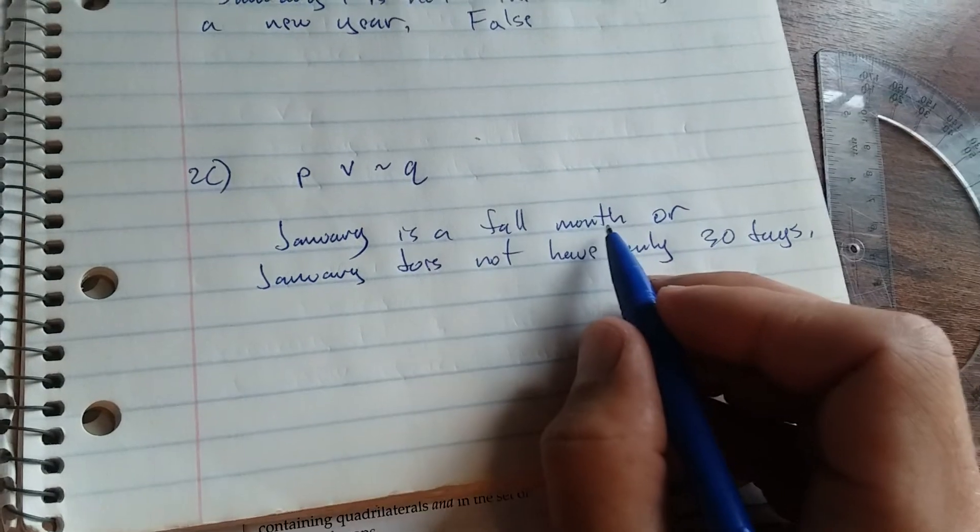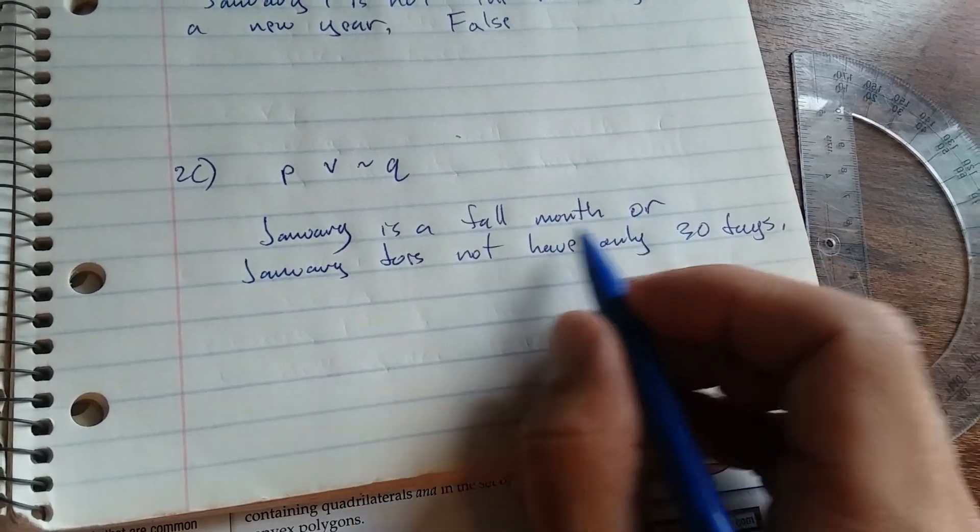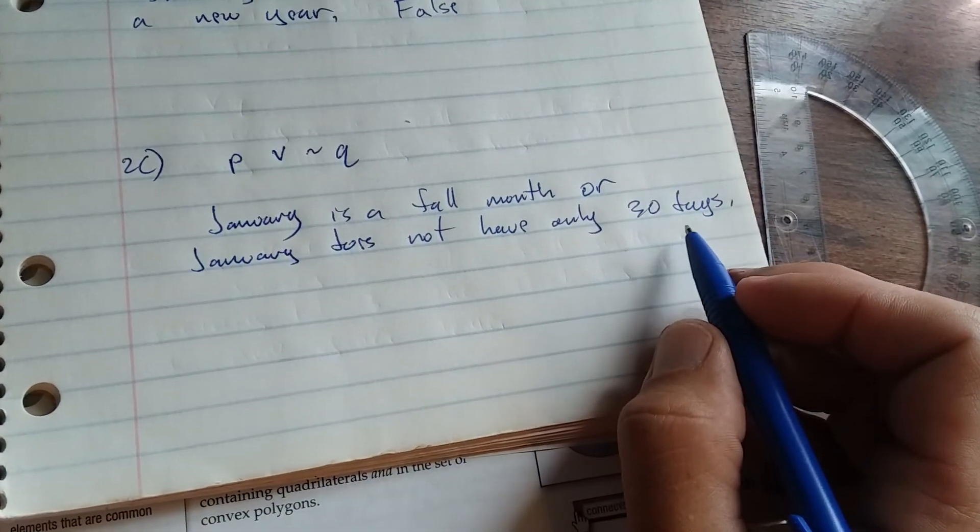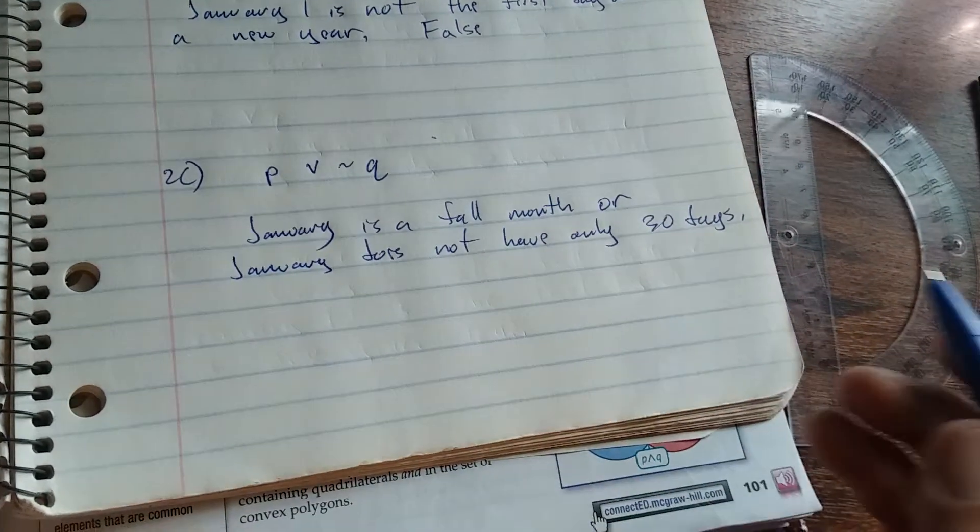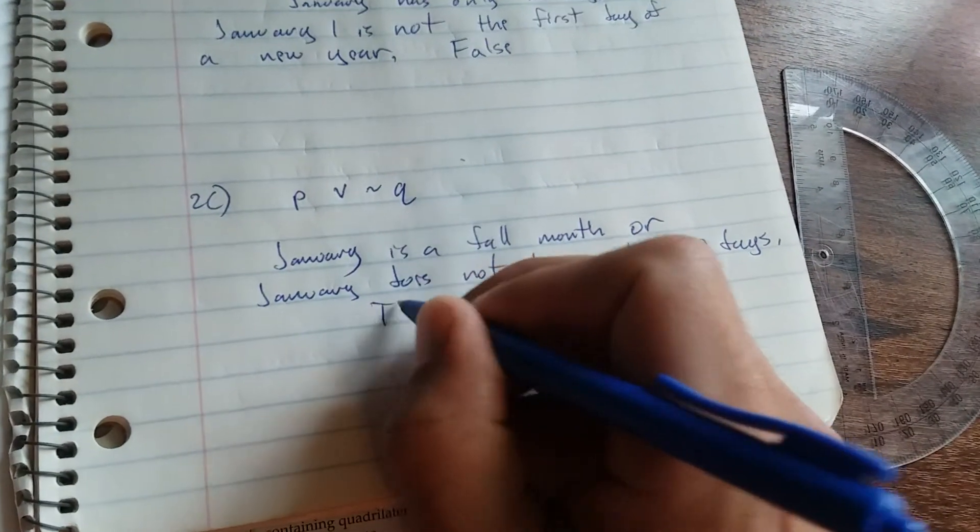Okay, so what we have is January is a fall month. That is false. Or January does not have only 30 days. That part is true. So we have false or true. Since one of them is true, the compound statement is true.